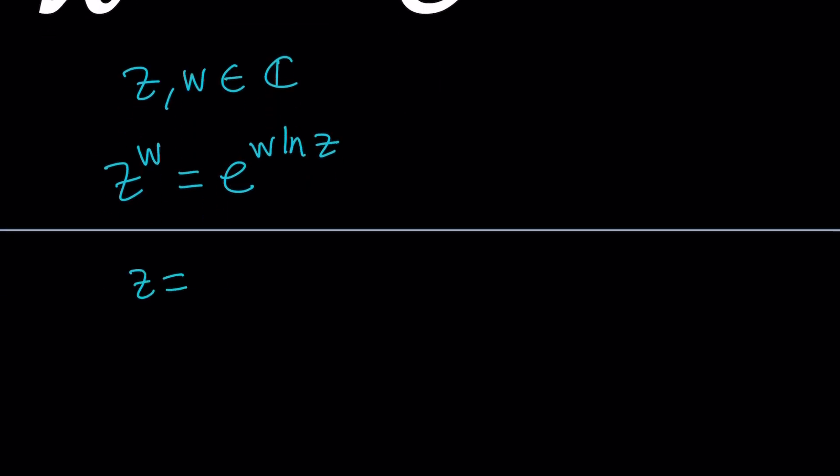Suppose z can be written as re^(iθ). Then ln z can be defined as ln r + iθ. Sometimes people write this as log, which is the complex logarithm, but I just use ln for simplicity's sake.